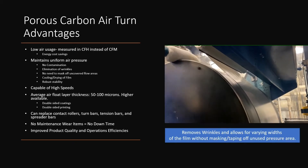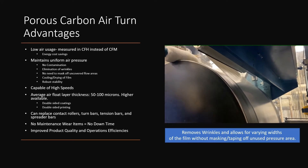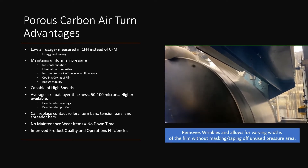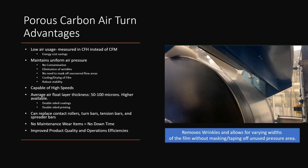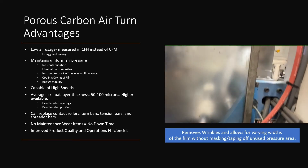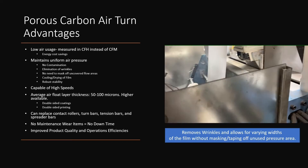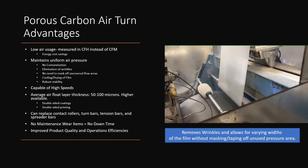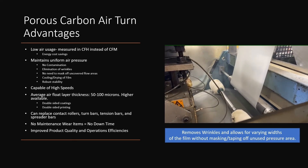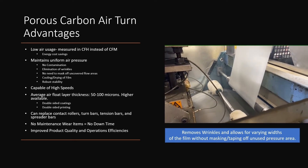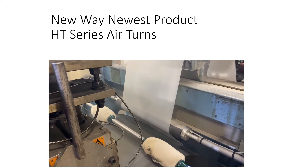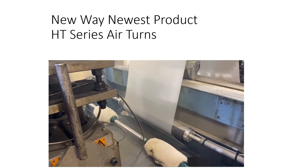Here we can see where wrinkles are formed in a web of polystyrene as it rotates around a drum. The polystyrene is then guided around an air turn, where the natural high-pressure air film smooths out the wrinkles from the polystyrene. This is one of the great advantages of the New Way air turn.